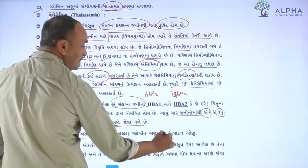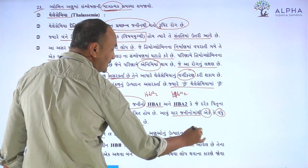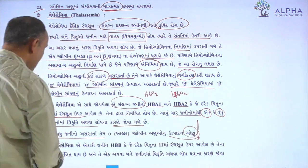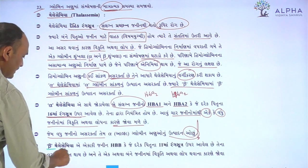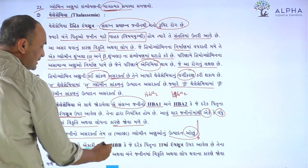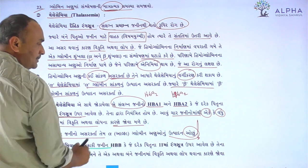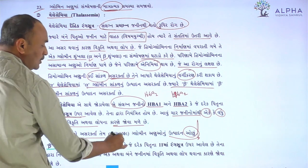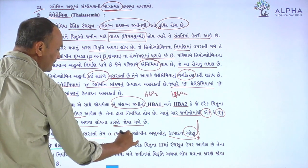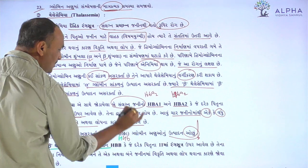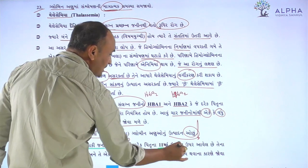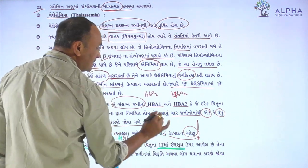These are the things where alpha globin chains are less than omega globin chains. At the same time, beta thalassemia involves the HBB gene, which is called HBB, located on chromosome 11.